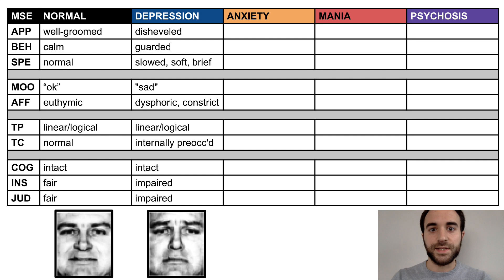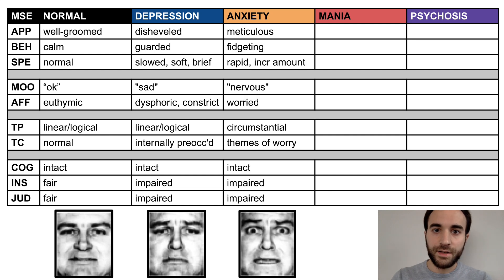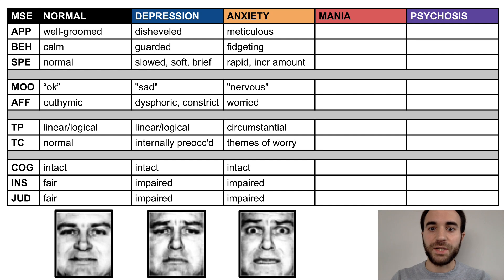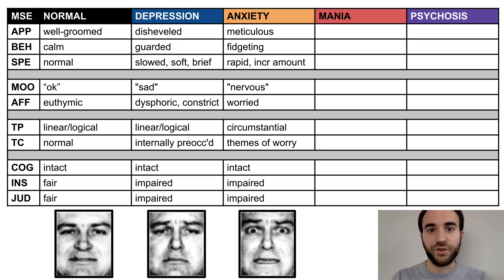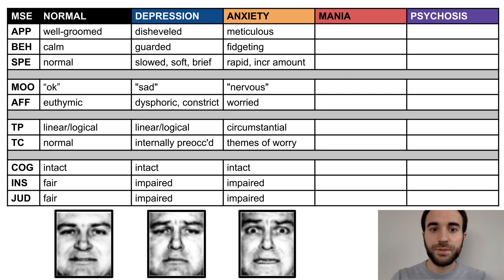Next, let's discuss anxiety. For anxiety, if the patient's anxieties extend to the management of their dress, then they may be meticulously groomed. They may appear restless, fidgeting with their hands or tapping their feet, and they may speak rapidly and include a lot of superfluous detail. The patient may describe their mood as nervous, worried, or simply anxious, and their affect will appear worried. Below, you can see an example of a worried affect — note the wide-open eyes and the furrowed brow. The thought process may be circumstantial and over-inclusive, and the patient may need to be repeatedly redirected to the topic at hand.